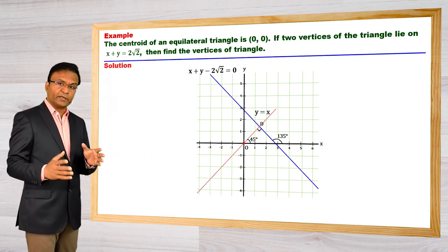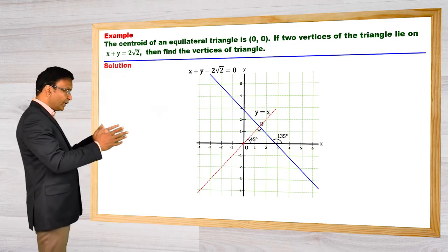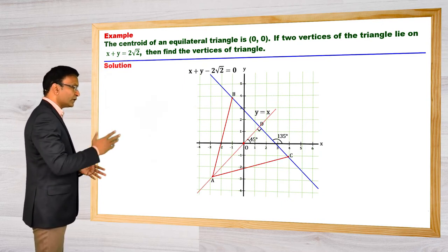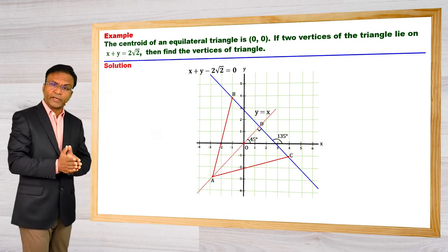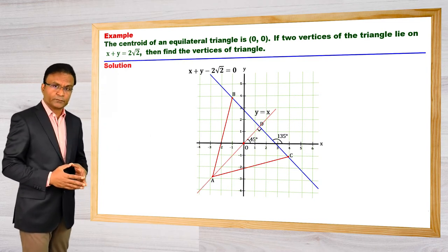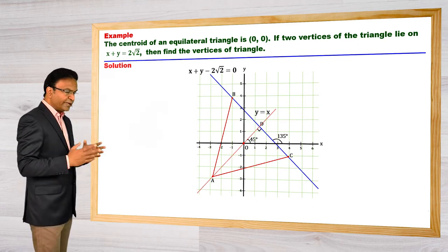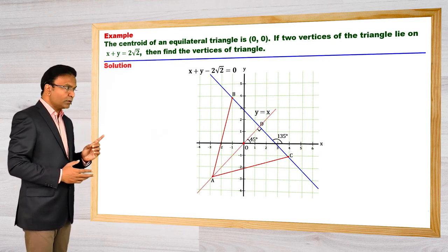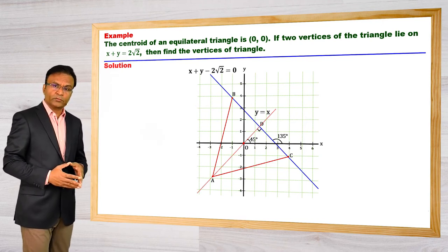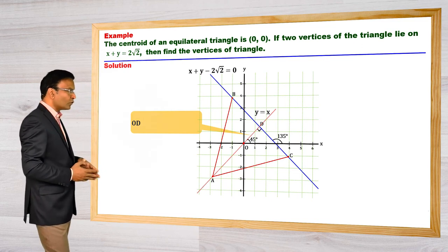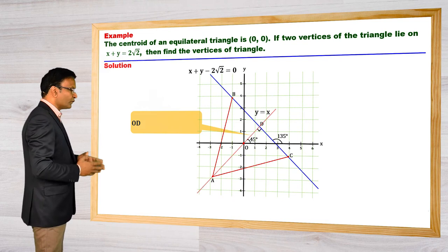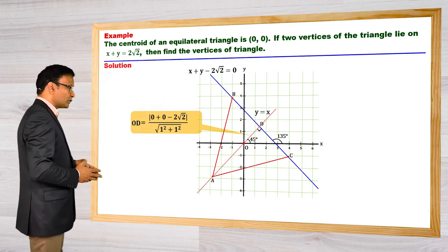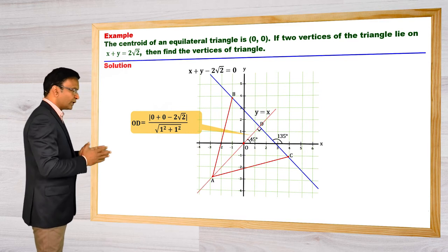One vertex of the triangle lies on this median. We have this equilateral triangle ABC where B and C are lying on the given straight line. We have to find the coordinates of A, B, and C. Can we find distance AO? We can find distance OD — it is the distance of O from side BC. This distance equals |0 + 0 − 2√2| / √(1² + 1²), which equals 2.